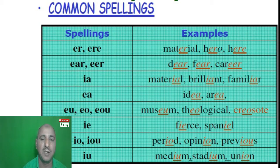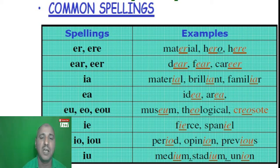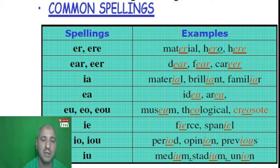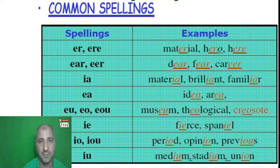Also the letters I-A, found in words like 'material', 'brilliant', and 'familiar'. The letters E-A also make the /ɪə/ sound in words like 'idea' and 'area'. Additionally, E-U, E-O, and E-O-U produce this sound in words like 'museum', 'theological', and 'curious'. The letters I-E also form this sound, as in 'fierce' and 'spaniel'.